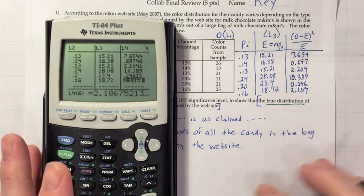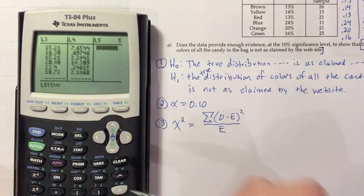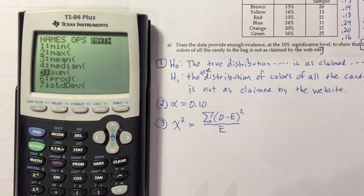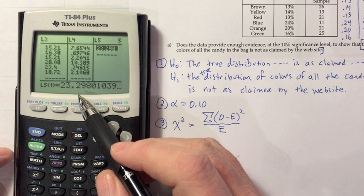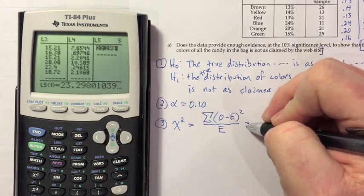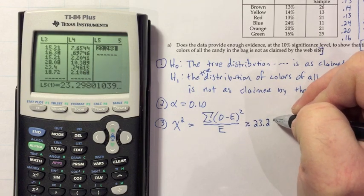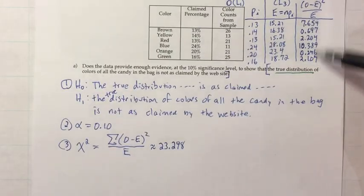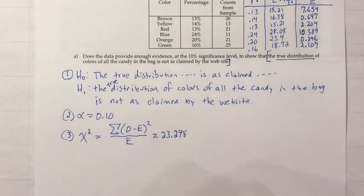Our test statistic is the sum of all those mini z-scores. I'll go into the List > Math > Sum menu and find the sum of L4. Highlighting it to see more decimals: 23.298. That's our test statistic. Worth mentioning: when I add on the calculator I'm using the unrounded versions. If you add the rounded three-decimal values you might get a slightly different last decimal — I'd accept either version, but the unrounded sum is the more accurate one.